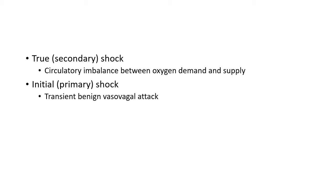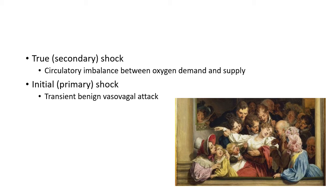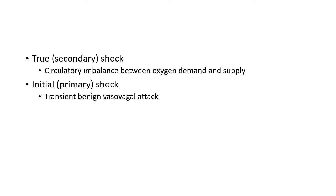Primary shock occurs immediately after trauma or in conditions like emotional overreaction. Some people faint due to sudden emotional reactions — fear, sorrow, or grief — and this is initial or primary shock. It is due to sudden vasodilation and peripheral pooling of blood from a neurogenic stimulus, resulting in reduced cardiac input and output, leading to hypotension and hypoperfusion. However, this is transient and benign.